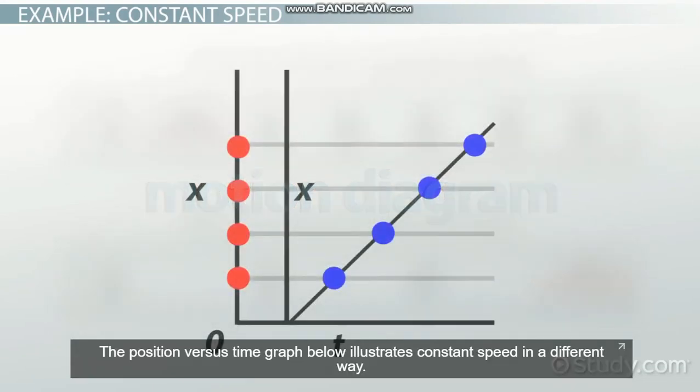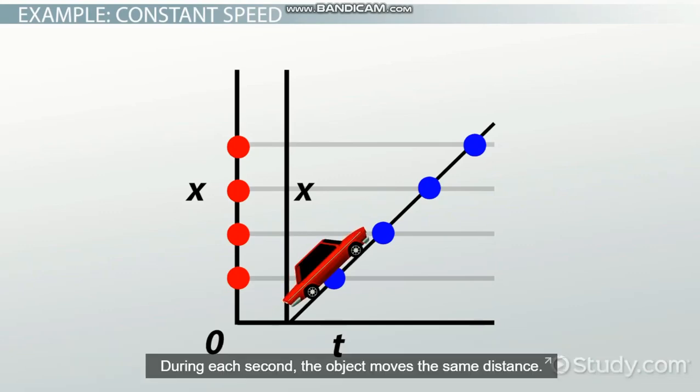This position versus time graph illustrates constant speed in a different way. During each second, the object moves the same distance.